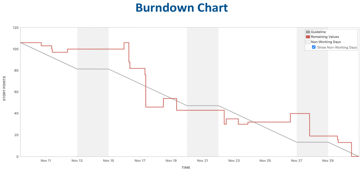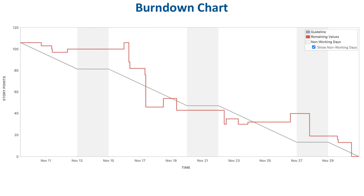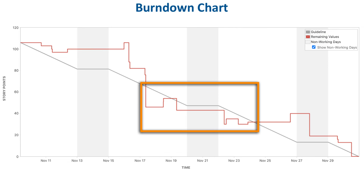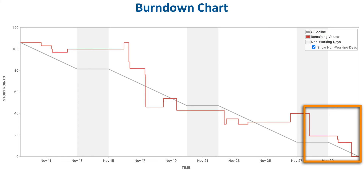Let's review a couple of real-life burndown charts. This was a four-week sprint, and it can hardly get better than this. The team planned to complete just over 100 points of issues, and at the end of the sprint they succeeded since the red line dropped down to zero. Over the course of the sprint, the red line nicely swirled around the gray line, never getting too far from it. It stayed above for the first week and a half, then a lot of stories got completed within two days and the red line fell below the gray line, indicating the team was progressing ahead of the linear speed. Then it stayed flat for a while, the team added some issues to the sprint, and eventually towards the end of the sprint the red line started going down again and ended at zero.